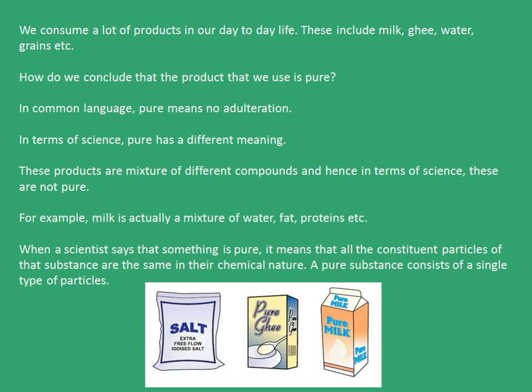We consume a lot of products in our day-to-day life. These include milk, ghee, water, grains, and many more. So how do we conclude that the product we use is pure? In common language, pure means no adulteration. In terms of science, pure has a different meaning. These products are a mixture of different compounds, and hence, in terms of science, these are not at all pure.